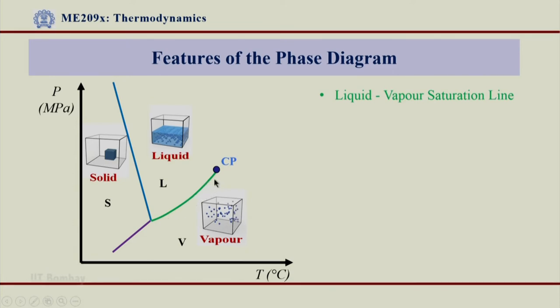This line actually goes from triple point to the critical point. The LV line, the LV saturation line goes from TP to CP or triple point to critical point.